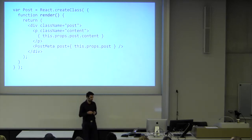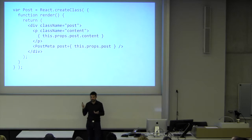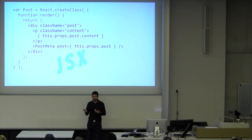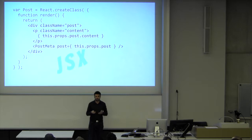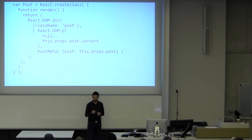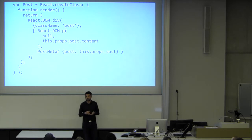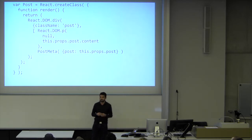The render method does one thing: it returns the HTML of that component, and that's about it. You may be curious why we have HTML instead of typical JavaScript code — this is something called JSX, and behind the scenes React compiles this to plain JavaScript objects. The cool thing is that designers can edit the code because it looks almost exactly like normal HTML.